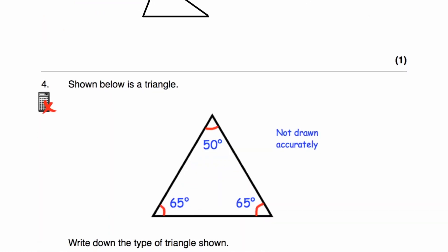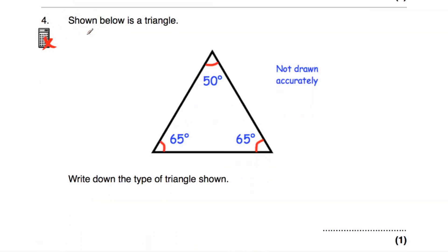Question number four says: shown below is a triangle with angles of 65 degrees, 65 degrees and 50 degrees. Because two angles are the same size, that will be an isosceles triangle, since an isosceles triangle has two equal angles and two sides that are the same length. In this triangle, that side would be the same length as that side. So because two angles are the same, the triangle will be isosceles.